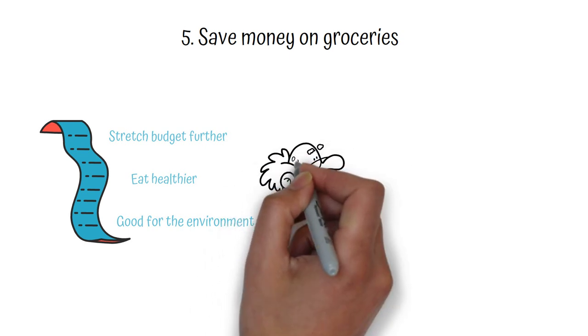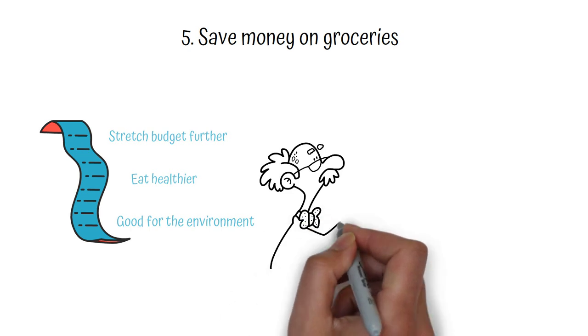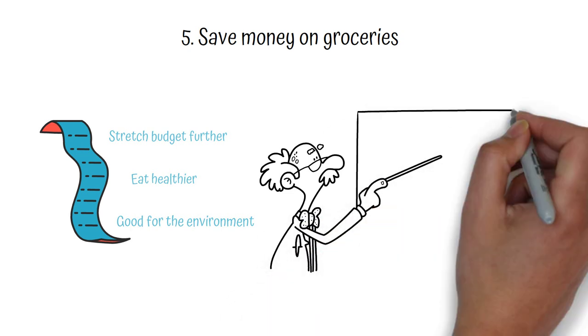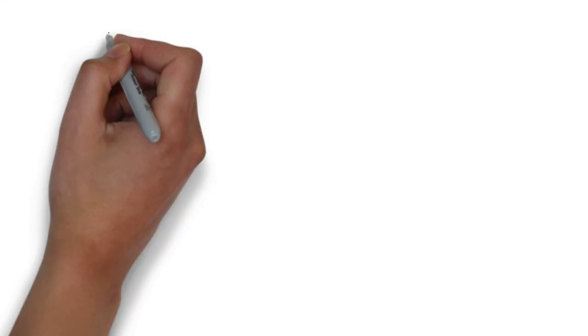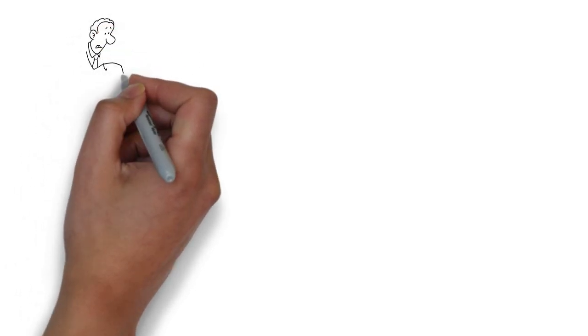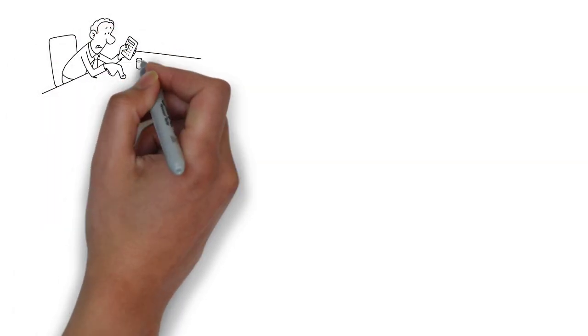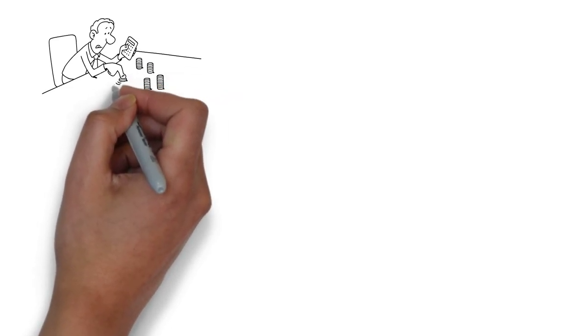Whether you're on a tight budget or just looking to cut costs, here are some examples on how to save money on your next trip to the store. First, make a budget and stick to it, determine how much you can afford to spend on groceries each week or month, and try to stick to that budget as closely as possible.